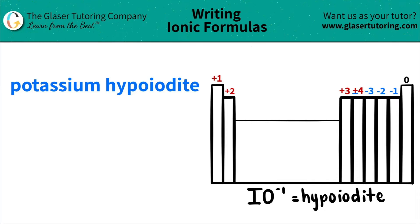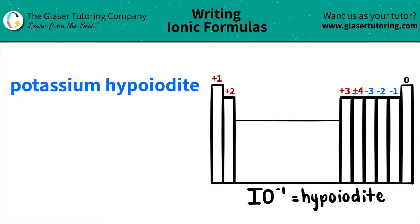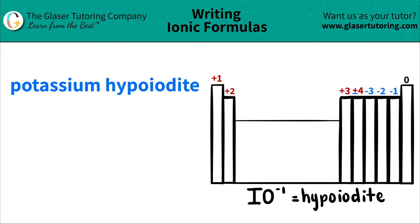Today, we are going to be writing the formula for the ionic compound potassium hypoiodide. So let's work from left to right. The first element that I see is potassium. I'm going to scan the periodic table, and I see that potassium is right here.